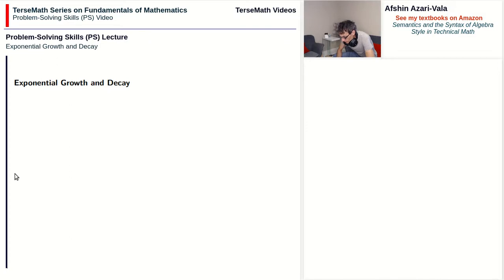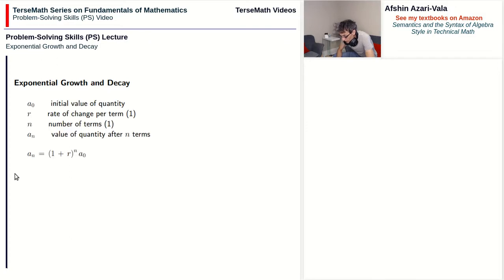The formula that goes with exponential growth and decay can always be written in this form: aₙ is equal to (1 + r) to the power of n times a₀. In this formula, a₀ is the initial value of some quantity. r is the rate of change per term — for example, every year you add twenty percent of the amount that you had at the beginning of that year.